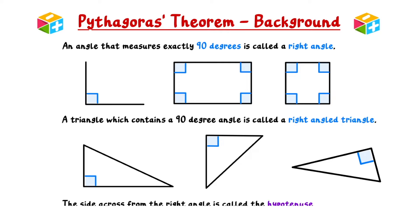In a right angle triangle, the side across from the right angle is called the hypotenuse. The hypotenuse will always be the longest side in the triangle. Let's take a moment to test your knowledge on these important definitions.